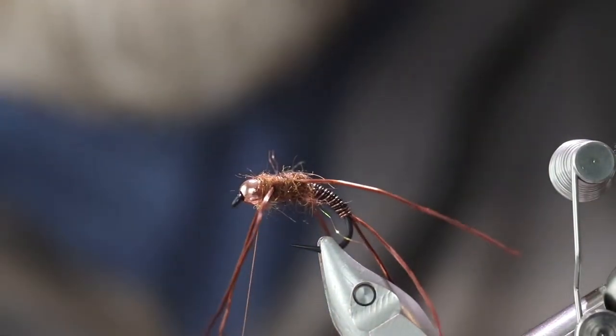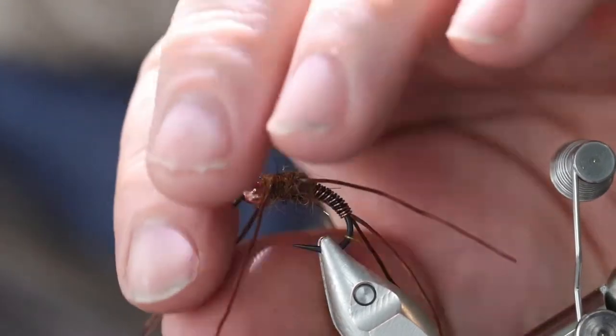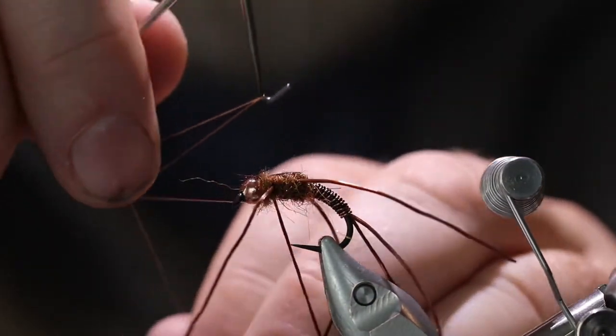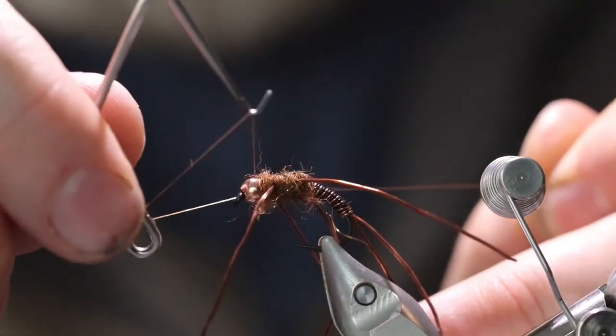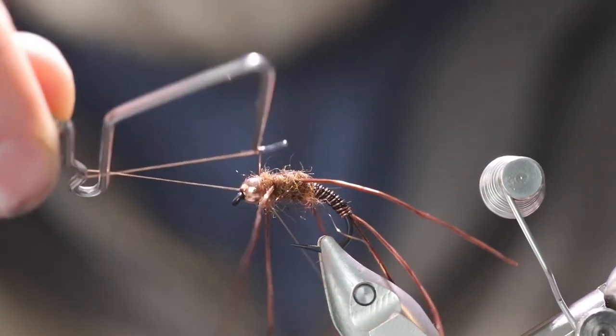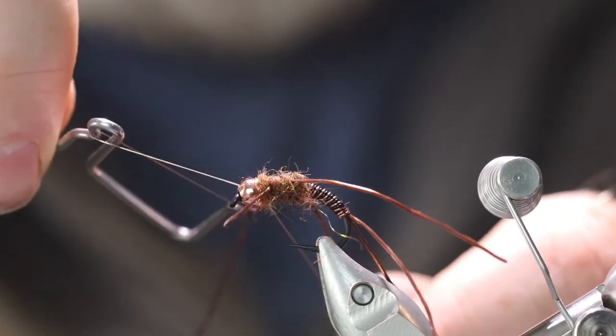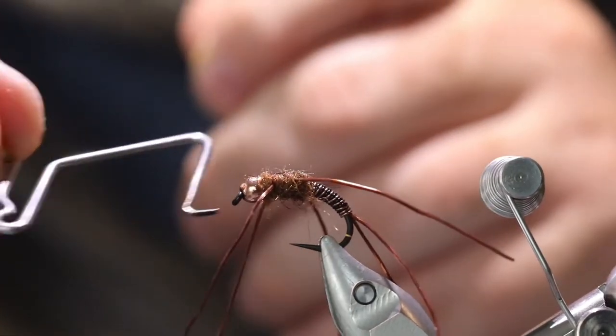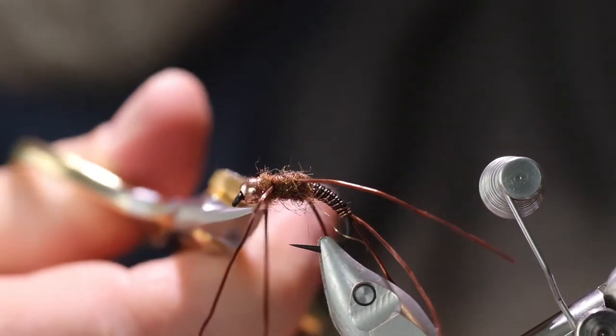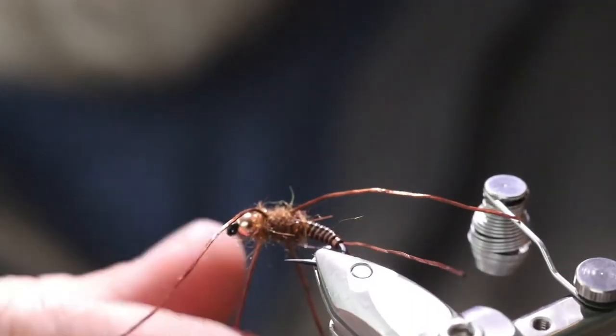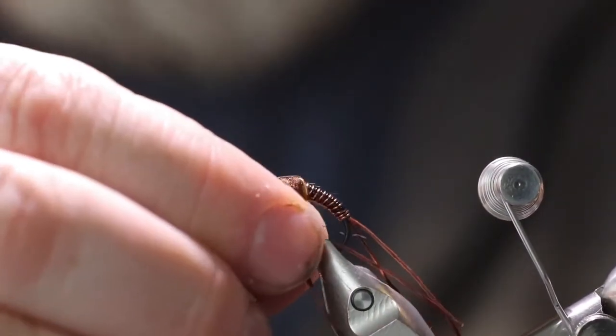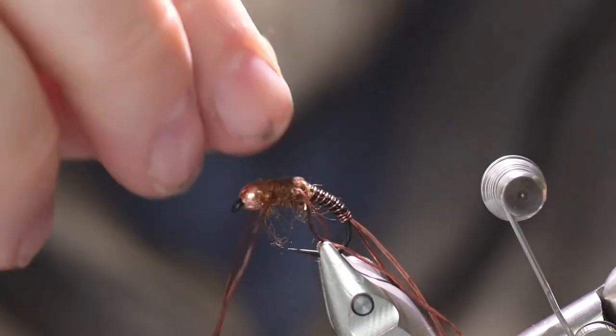Now take your whip finish tool. You don't need to do a whole lot of whip finish on this because it's going to have UV cement over the shell, the wing case. Now let's get that thread out of here. Make sure everything's where we want it. And make sure you get your fibers that are there off the top. Get those rolled down.